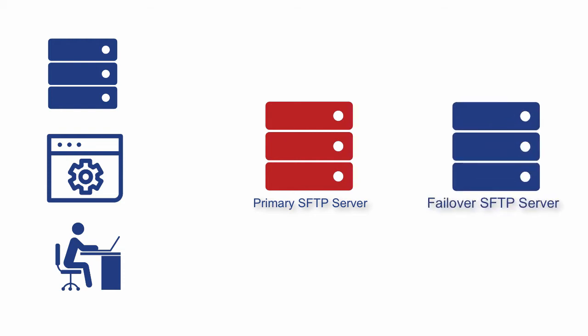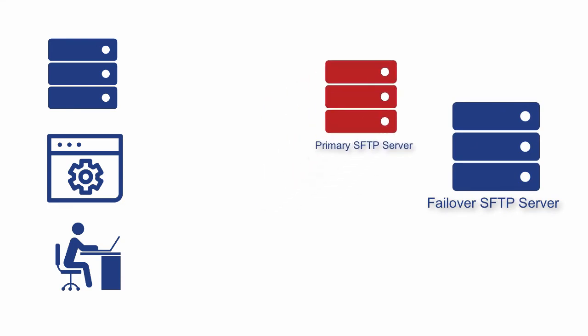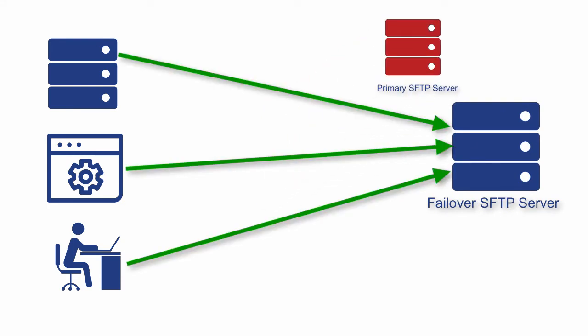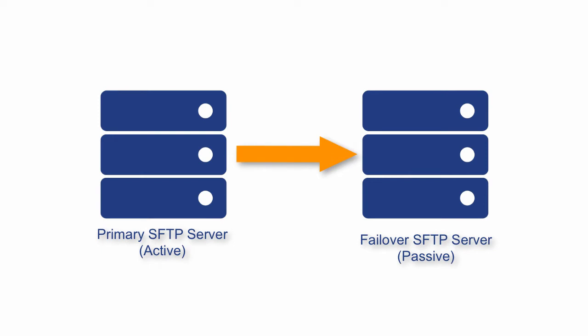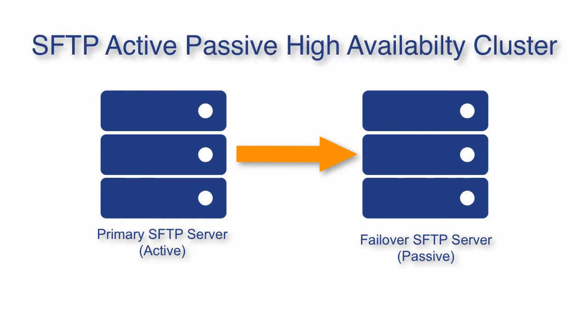A failover SFTP server serves as a backup that you can quickly activate if your primary server goes down. If you have one, you can reduce your downtimes to just a couple of minutes instead of hours or days. An active SFTP server coupled with a passive or failover server is usually known as an SFTP active, passive, high availability cluster. Let's now go through the steps of setting one up using two instances of Jscape MFT server.